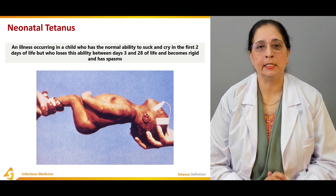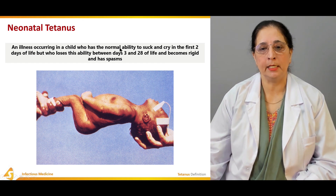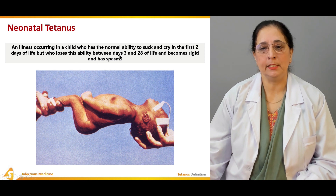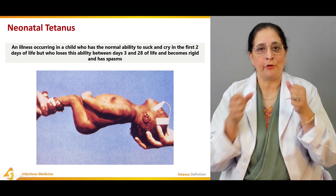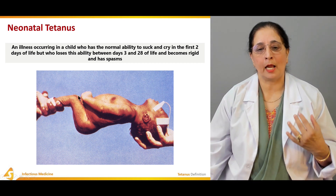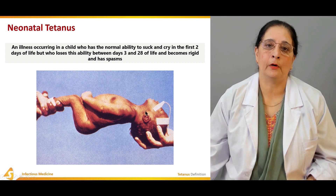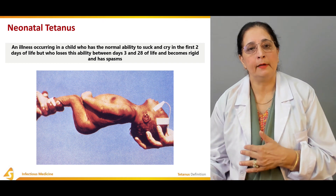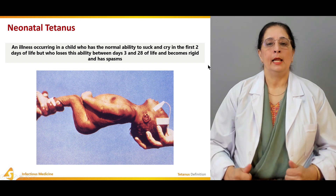Neonatal tetanus is an illness occurring in a child who has the normal ability to suck and cry in the first two days of life, but loses this ability between day three and day 28 of life and becomes rigid with spasms. Here you can see a newborn baby with tetanus — the body is so rigid, the muscles are hypertonic and in spasm, which is very characteristic of tetanus.